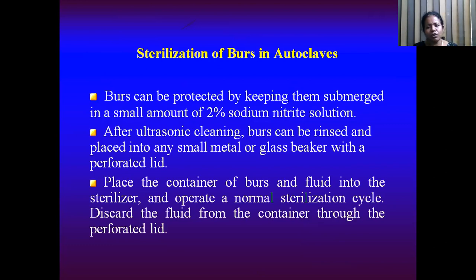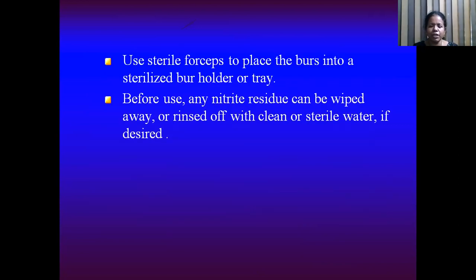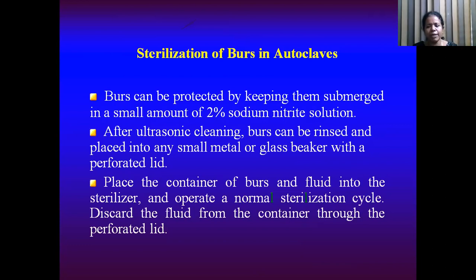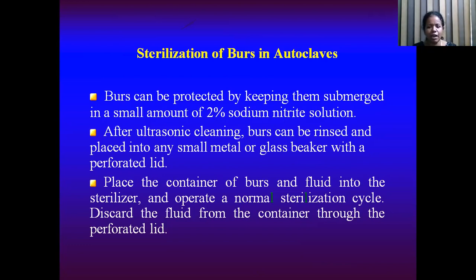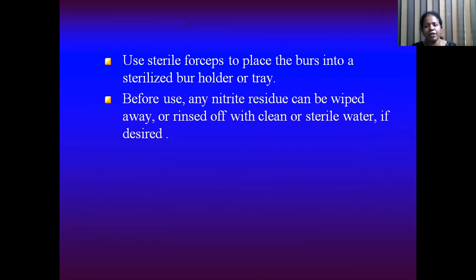For sterilization of burs in the autoclave, burs can be kept in a beaker or container containing above 2% sodium nitrite solution. After ultrasonic cleaning, burs are placed in a glass or metal beaker with a perforated net, placed into the sterilizer, and the normal sterilization cycle proceeds. The fluid should be discarded after the cycle. Then use sterilized forceps to place the burs into the bur holder or tray. Any nitrite residue can be wiped away or rinsed off with clean or sterile water if desired.